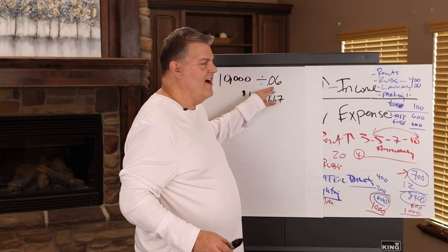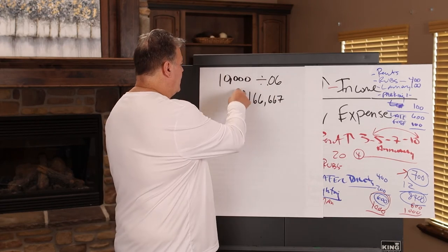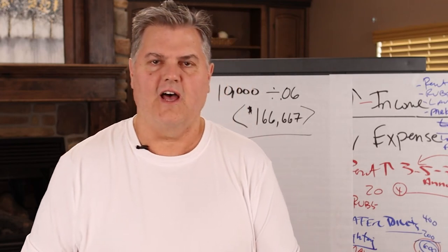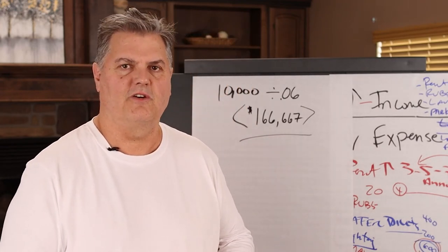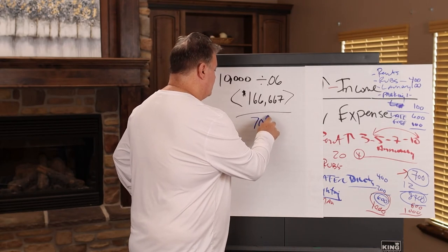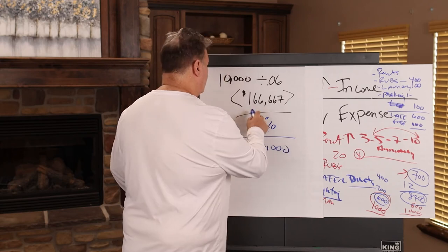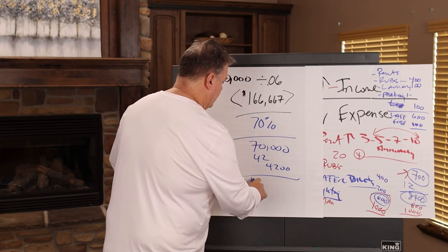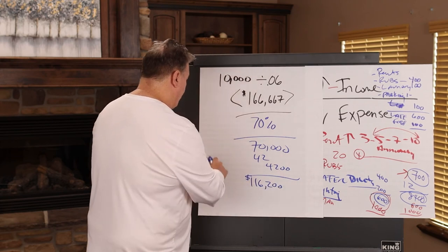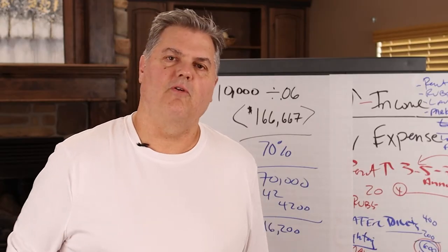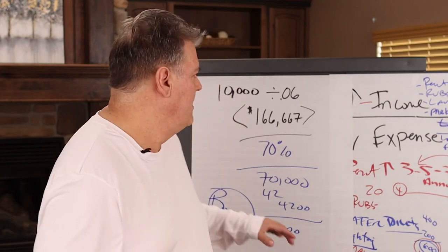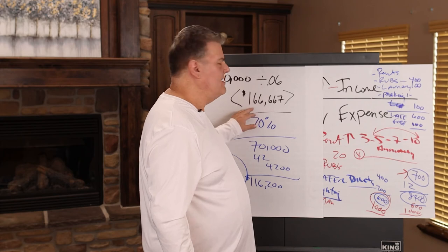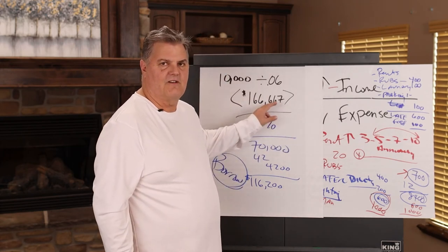So we have $10,000 and we divide it by 0.06, which is the cap rate for the area. That gives us an increase in value of $166,667. That is the importance of increasing your income and decreasing your expenses. A simple $10,000 improvement to the NOI — net operating income — divided by six percent gives me an increase in property value of $166,667.